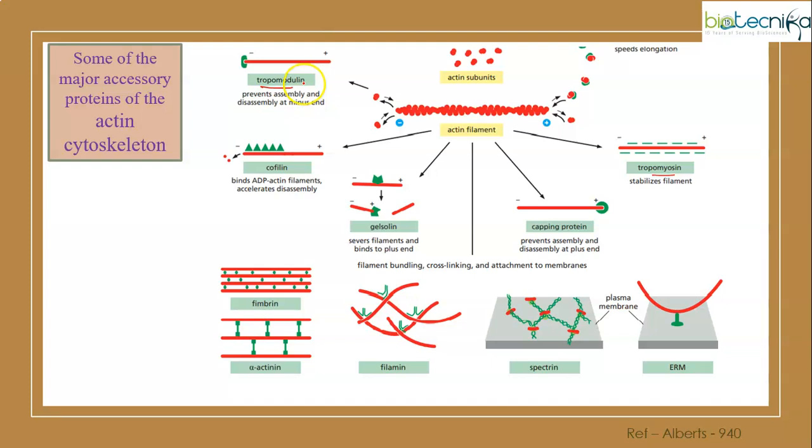Tropomodulin - not to be confused with tropomyosin - prevents assembly and disassembly at minus end. Tropomyosin stabilizes the overall filament like microtubule associated protein. Gelsolin is related to catenine, severing the filament towards the plus end. Cofilin promotes disassembly by binding to ADP actin filaments at the minus end. Capping protein acts at the plus end with neither assembly nor disassembly.